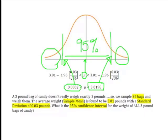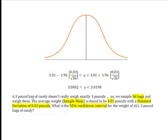In conclusion, the 95% confidence interval for the weight of all 3-pound bags of candy is between 3.0002 and 3.0198 pounds. Hopefully this helps and I will see you guys around the chalkboard. Have an awesome day.